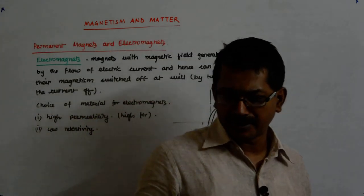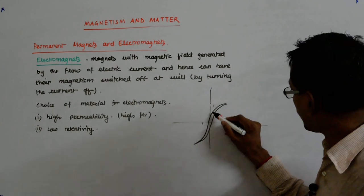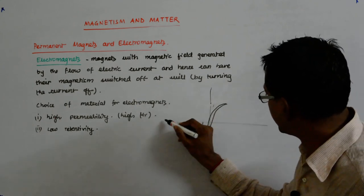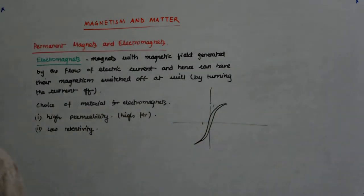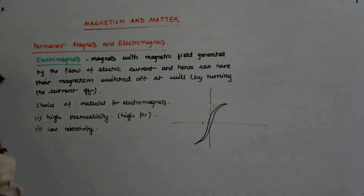Normally low retentivity is accompanied by low coercivity. You understand? As it starts dropping down, suddenly it cannot be like this, that it comes here and suddenly it goes like that. Though there are materials that can be made.